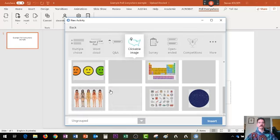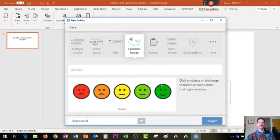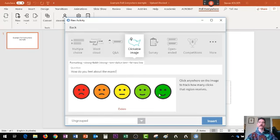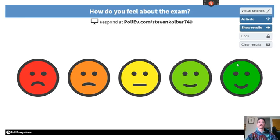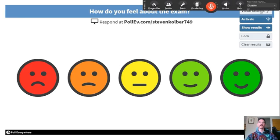Let's add a clickable image. This is our question — 'How do you feel about the exam?' That's the image, and participants will be able to click anywhere they like. This is what our PowerPoint looks like: we've got our title slide, and the question at the top is 'How do you feel about the exam?'